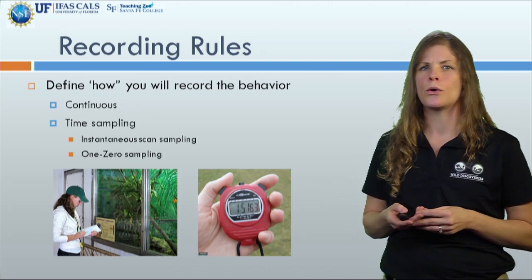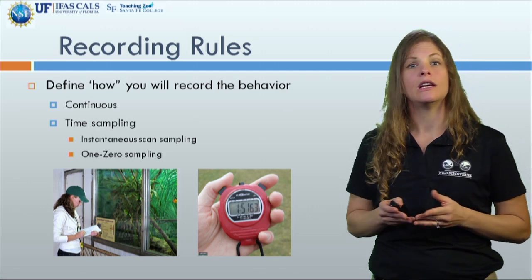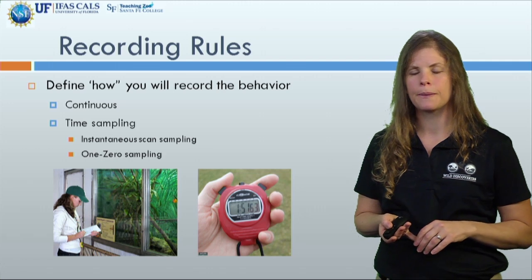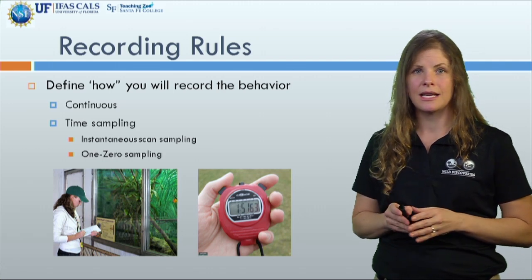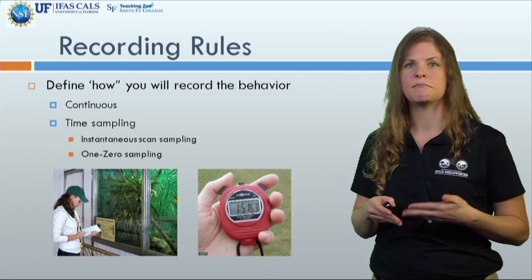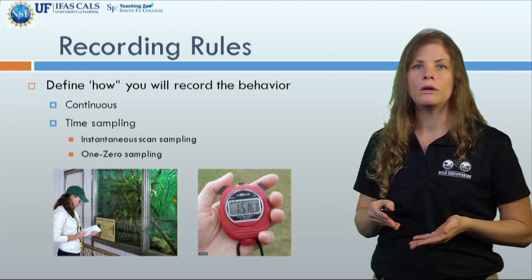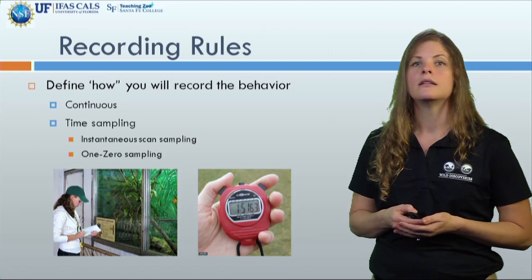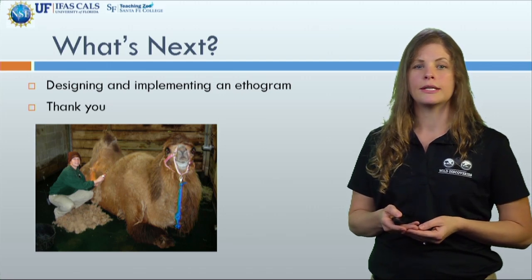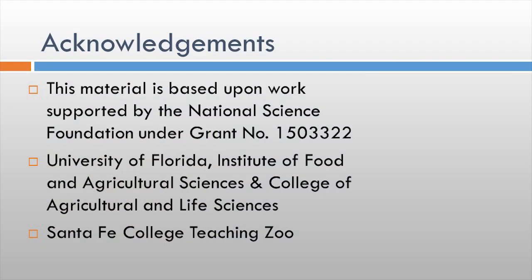The other type of recording behavior is time sampling, and this is the technique you will be using if you choose to participate in collecting animal behavior with our wildlife cameras as a citizen scientist on our website. When using the time sampling method, an observer records animal behavior periodically at intervals — say 30 seconds or a minute — and you can use a stopwatch or your phone to keep track of the time intervals. Our next lecture will focus on designing and implementing an ethogram. Thank you for your time.